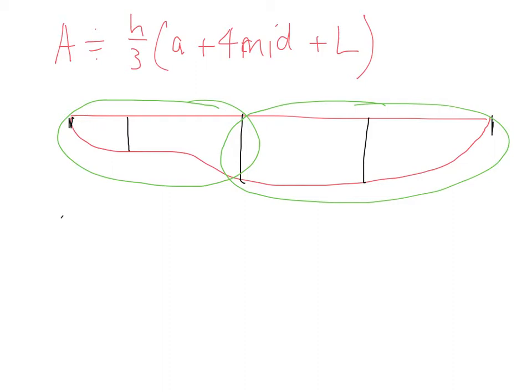So area 1 will be our h over 3, still 30 over 3 because our height is 30, outside of our first which was 5 plus 15 times 4 plus 18, which ends up being 10 multiplied by 83, which is 830.